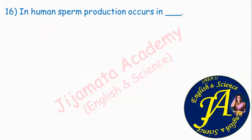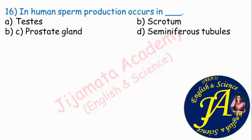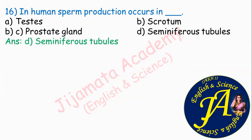In human sperm, sperm production occurs in dash. Options are testes, scrotum, prostate gland, seminiferous tubules. Option D is correct: seminiferous tubules. Seminiferous tubules are present in the testes.